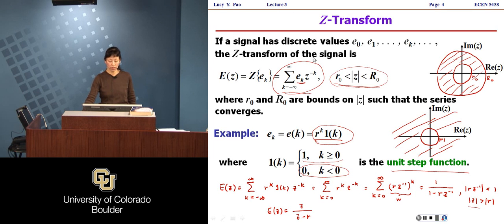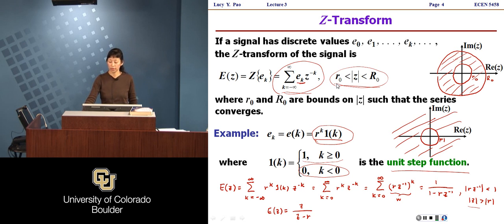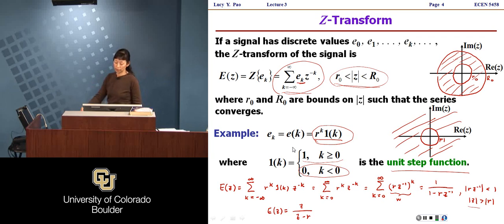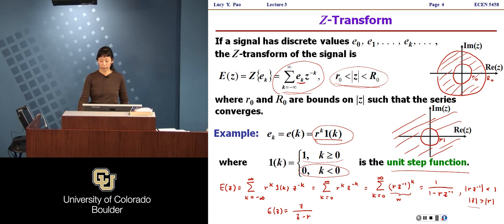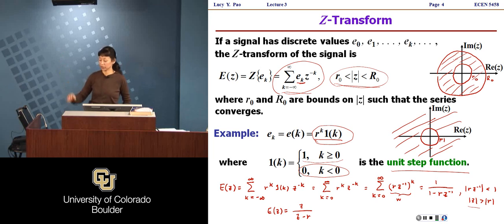We talked about the Z transform. In general, if you have a time domain sequence E sub k, its two-sided Z transform is defined as a sum, and the sum converges in a region of convergence that's typically annulus-shaped. We talked about a particular example — an exponential sequence r to the k times the unit step function 1(k). Since it's a one-sided causal right-handed sequence, the region of convergence is the area in the Z-plane outside of a disk of radius corresponding to the magnitude of r. For a two-sided sequence, the region of convergence is the intersection of two regions, giving an annulus.